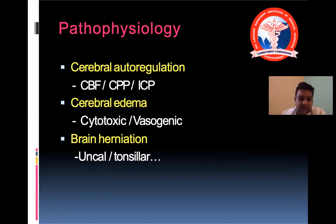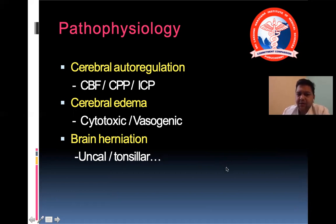In pathophysiology, we will discuss cerebral autoregulation — that is CBF, CPP, and ICP. We'll talk about cerebral edema, which could be cytotoxic or vasogenic. And finally, brain herniation, which can be uncal, tonsillar, or other types.